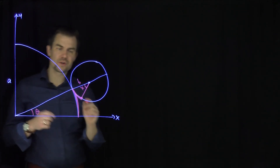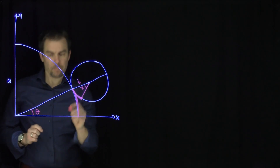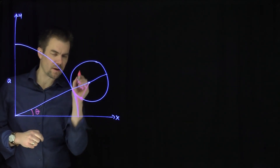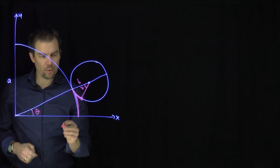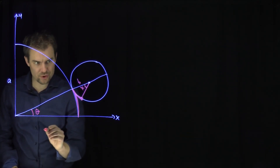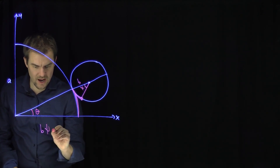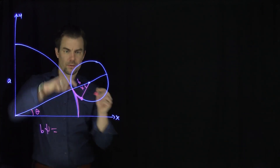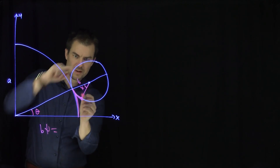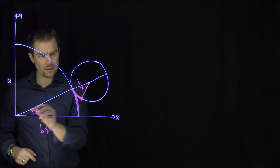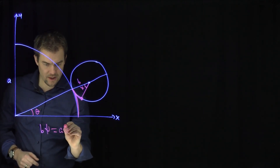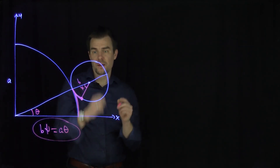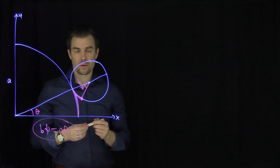Then the definition of the epicycloid — this is not to scale — but it must be the case that if that's a point on the epicycloid, then that point has to set up a relationship that b times psi has to equal a times theta. So the arc length over here is b times psi, and the arc length over here is just a times theta. That relationship defines the point of the epicycloid.